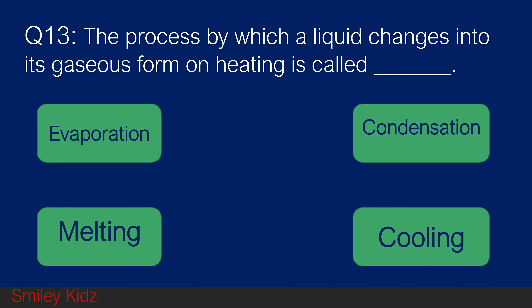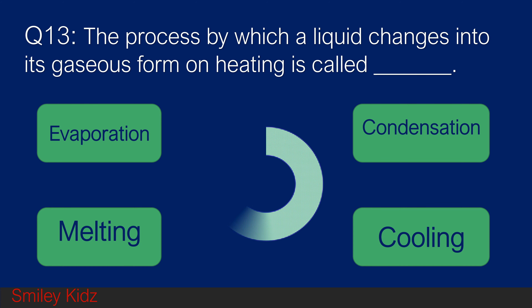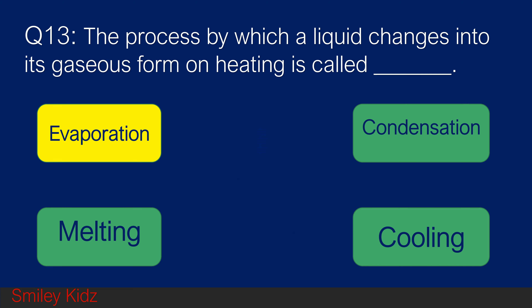Question number 13. The process by which a liquid changes into gaseous form on heating is called: option A evaporation, option B condensation, option C melting, and option D cooling. Your time starts now. And your time is up. The right answer is evaporation. The process by which a liquid changes into its gaseous form on heating is called evaporation.